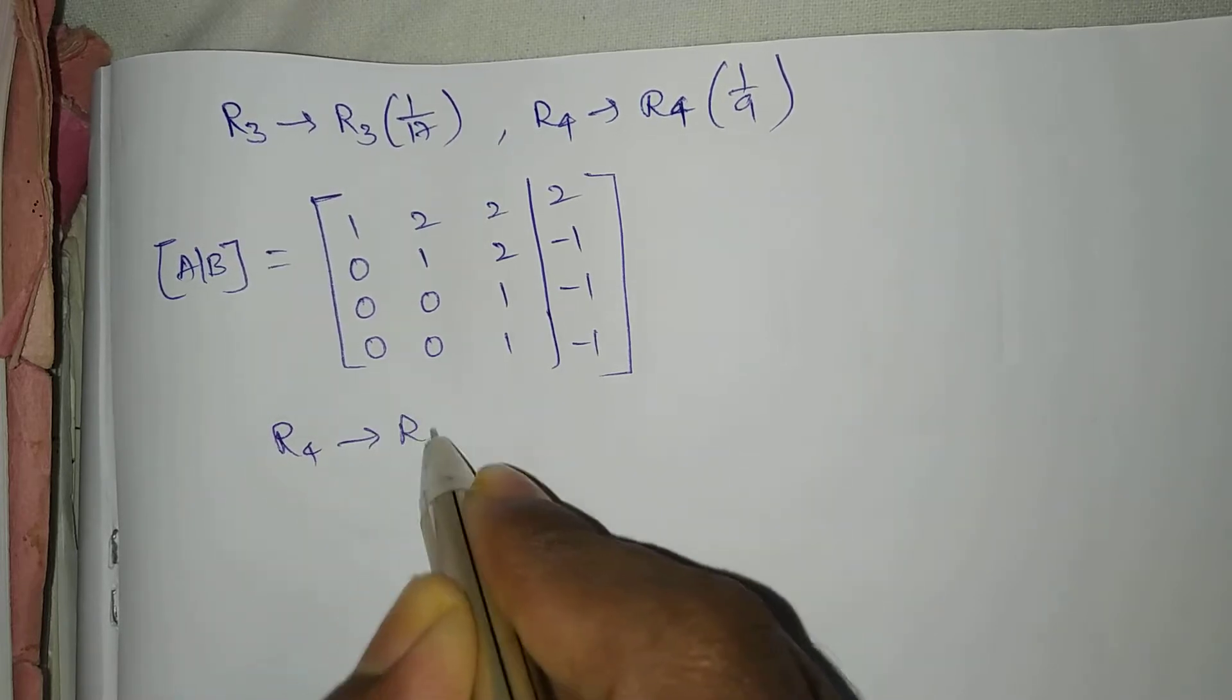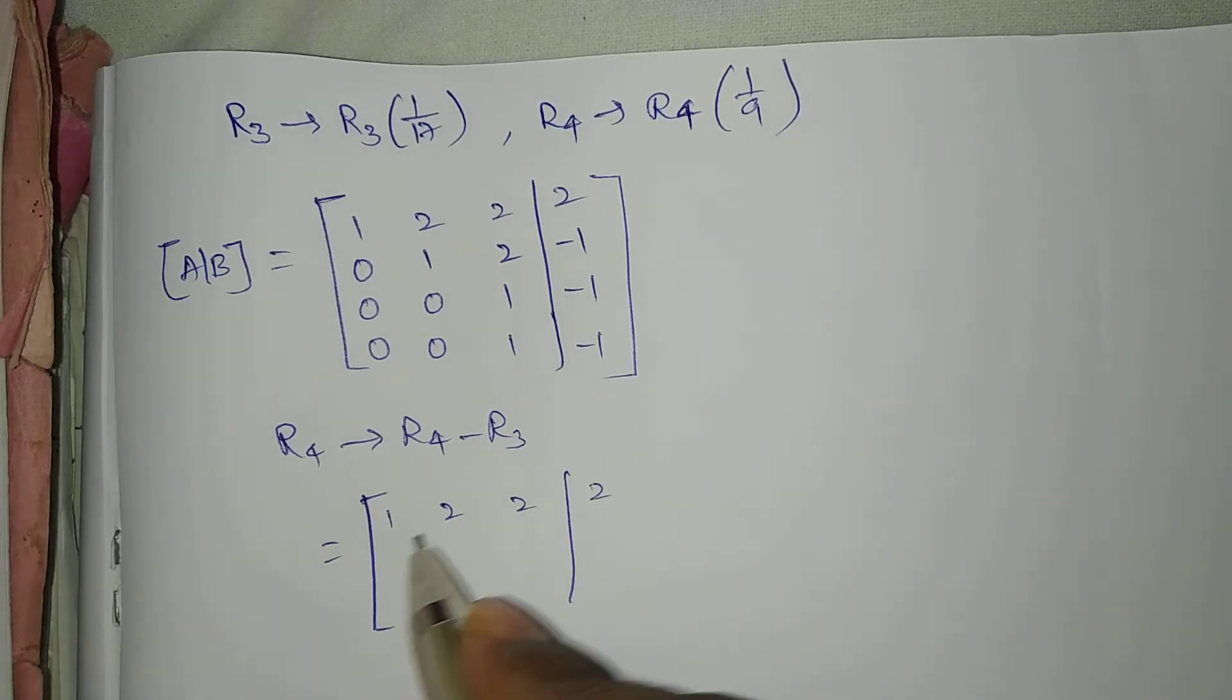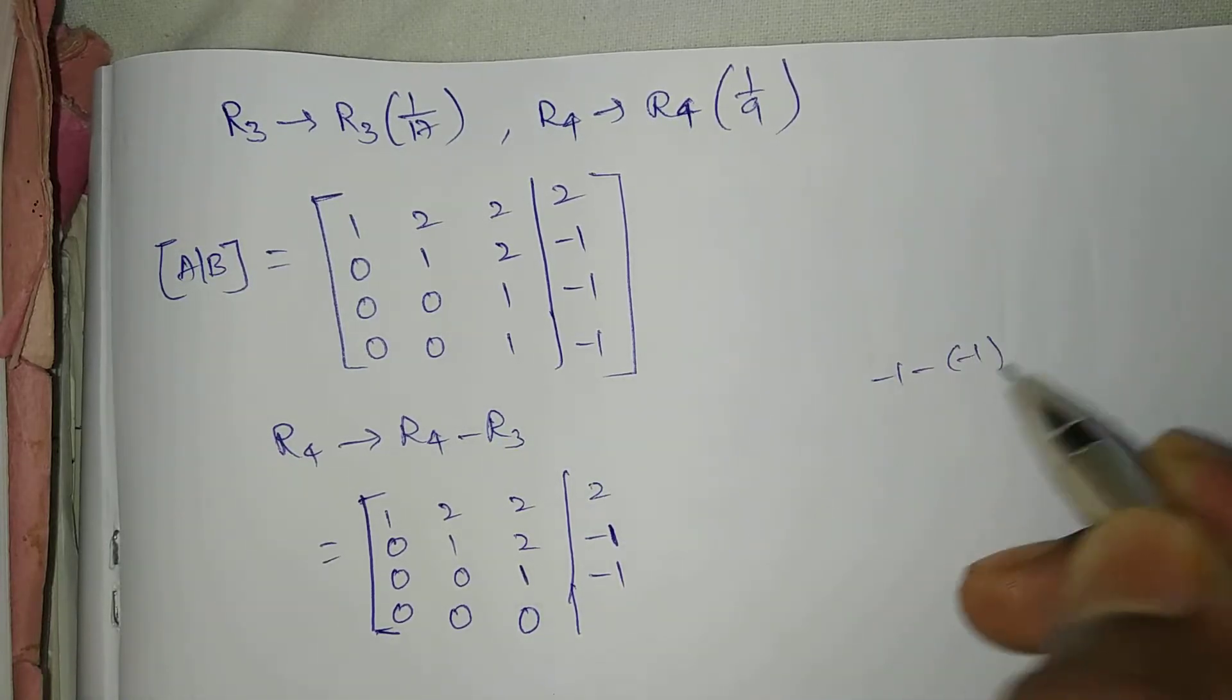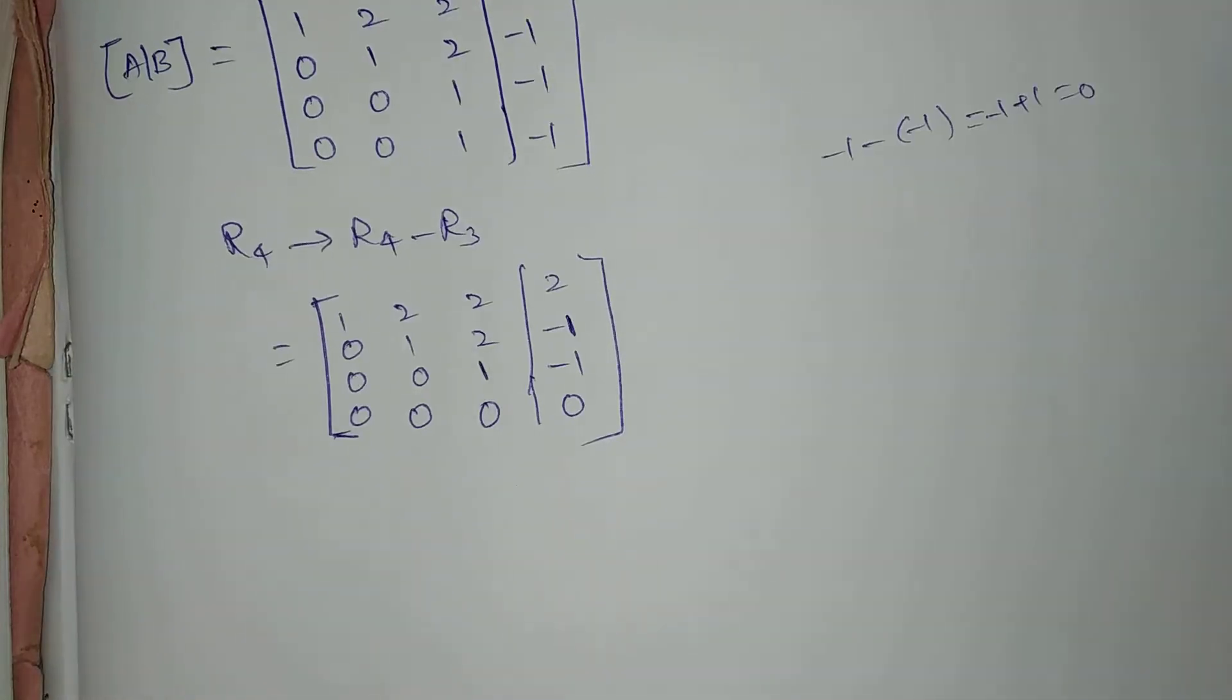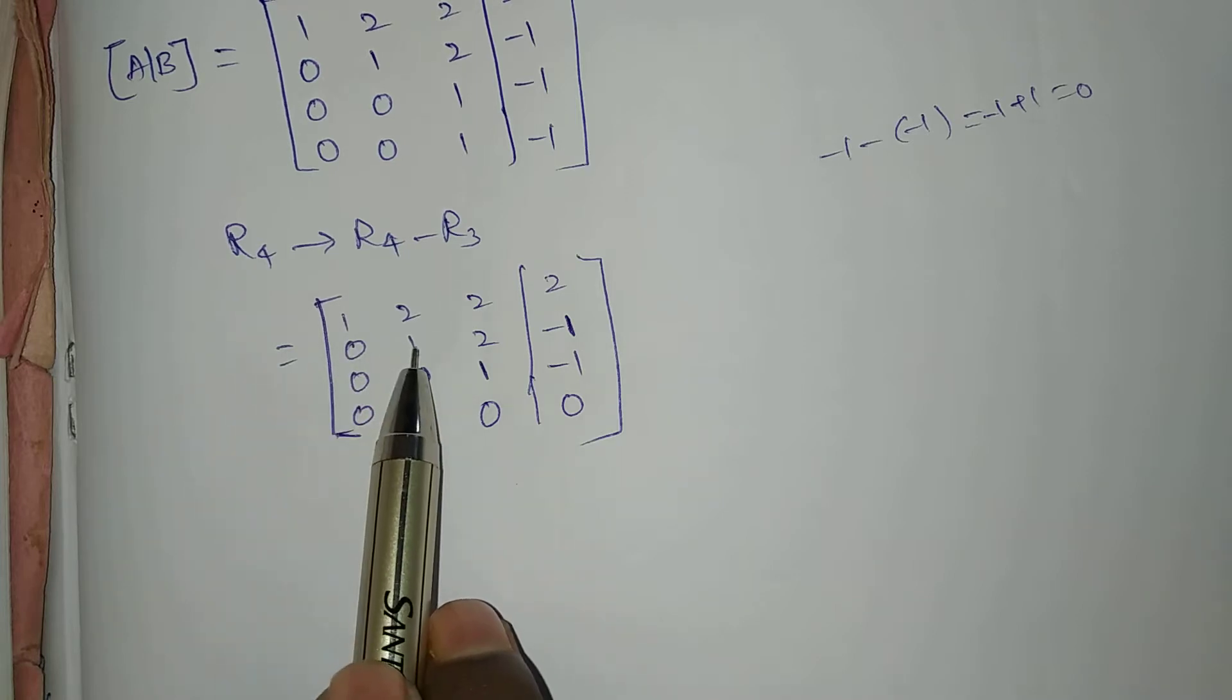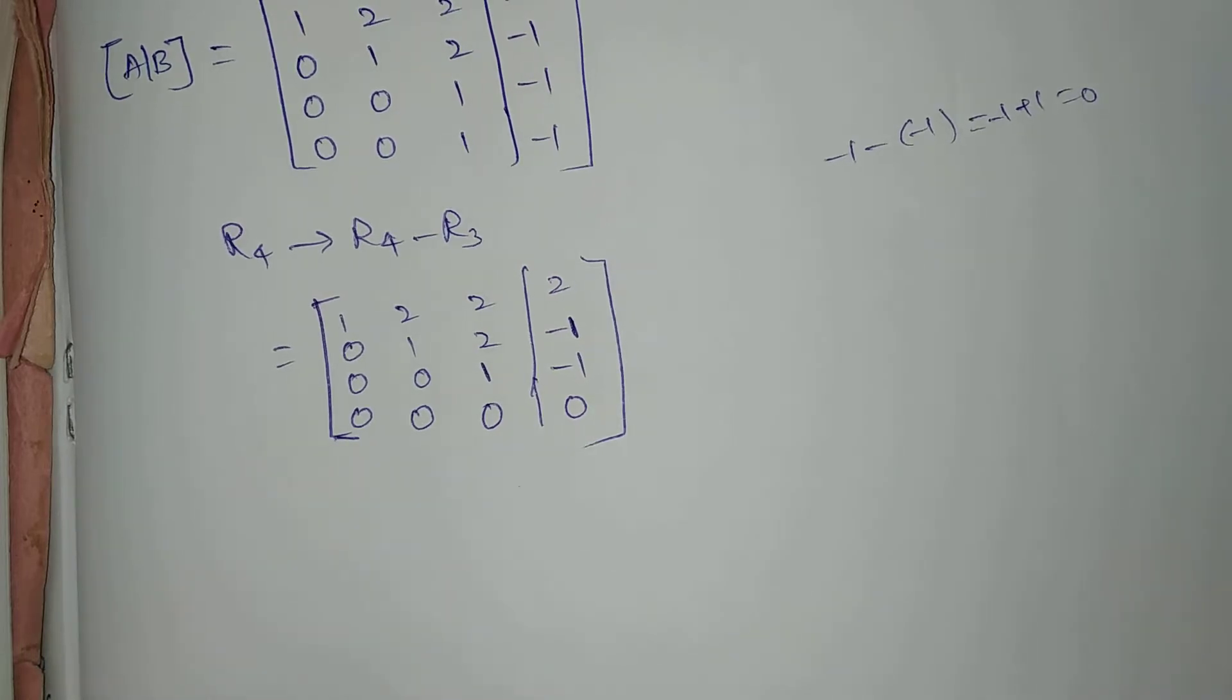The final matrix is 1, 2, 2, 2; 0, 1, 2, minus 1; 0, 0, 1, minus 1; 0, 0, 0, 0. This gives equations: x plus 2y plus 2z equal to 2. Next, y plus 2z equal to minus 1. Next, z equal to minus 1.